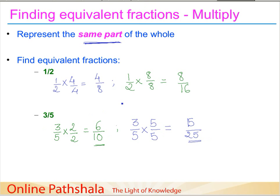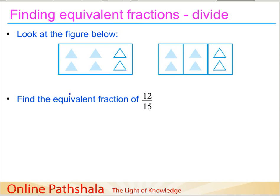There is also another way to find equivalent fractions. For a fraction like six by ten, the second method is the inverse of multiplication — we divide by a common factor. To understand this, let's use a figure. We want to represent a fraction from this figure, counting the total parts and shaded parts.